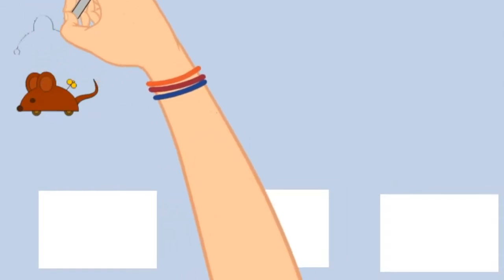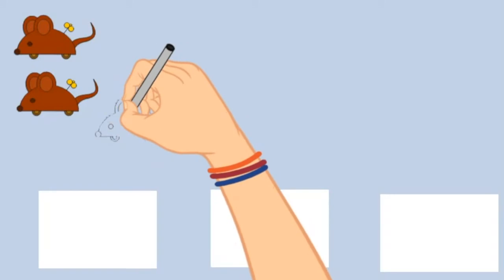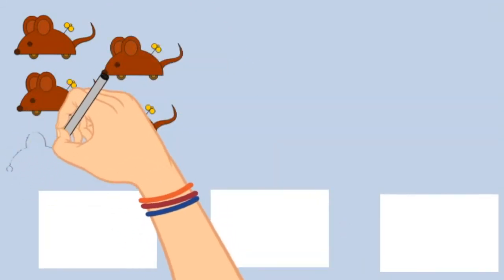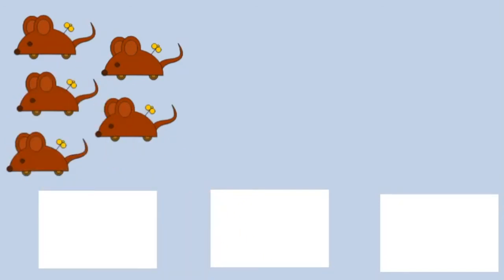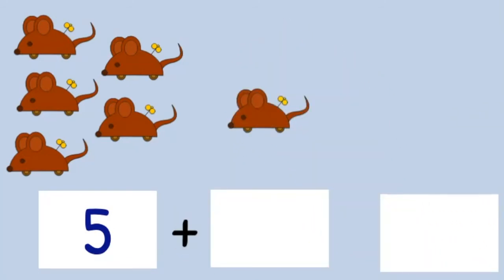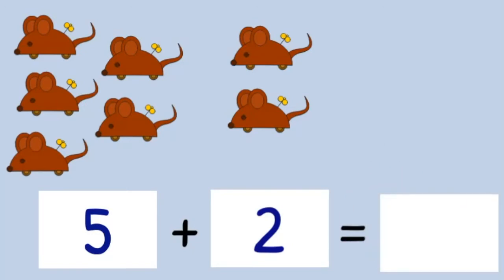One, two, three, four, five. Plus one, two. Five plus two equals seven.